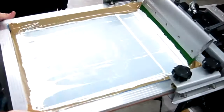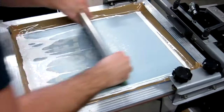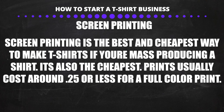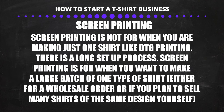Next, let's talk about screen printing. Screen printing is the oldest and most popular way to make t-shirts. It's also the cheapest way to make shirts if you're mass producing one design. Screen printing is not for making just one shirt like DTG — it's for mass producing one t-shirt.